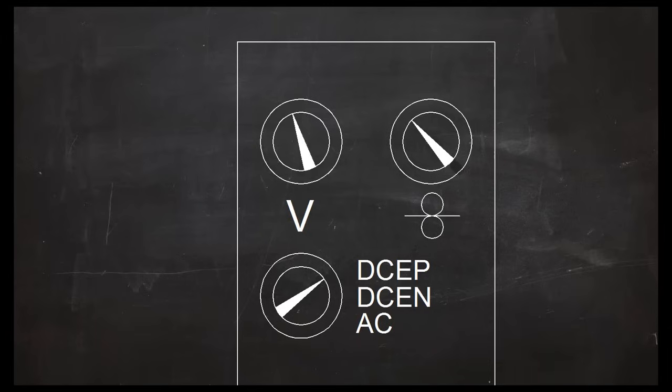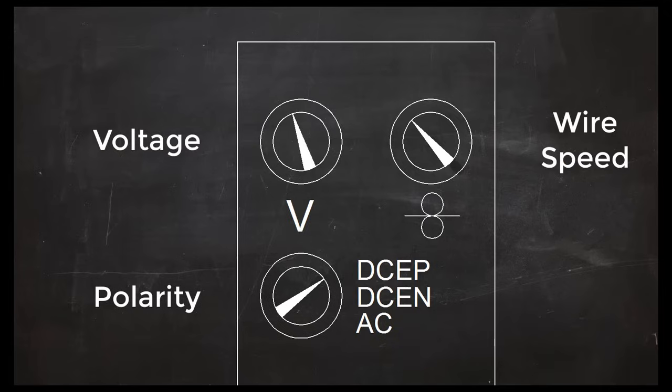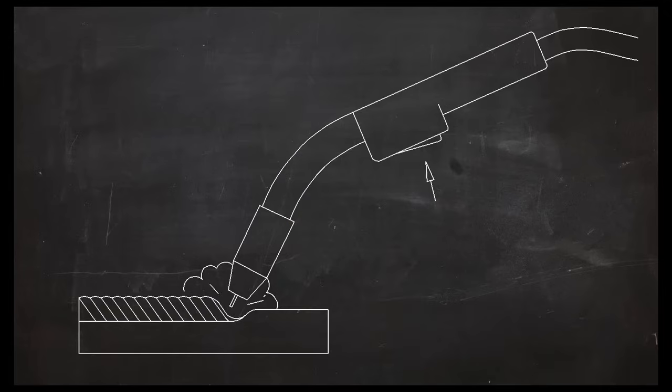In flux core welding, all of the machine controls are set on the machine itself. The most important of these are polarity, wire speed, and voltage. The trigger on the gun is just an on-off switch.